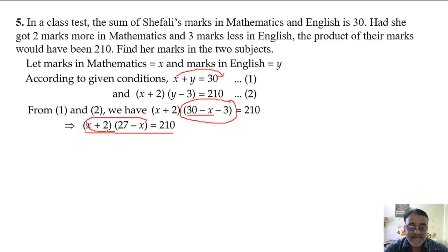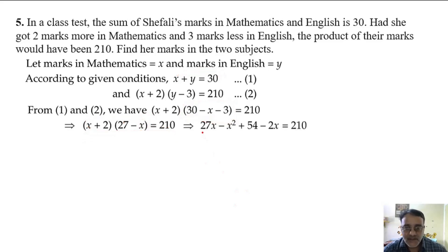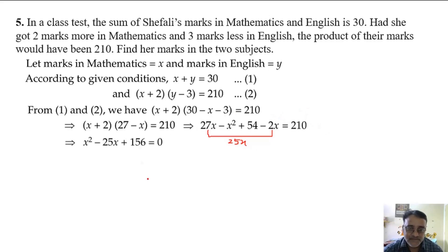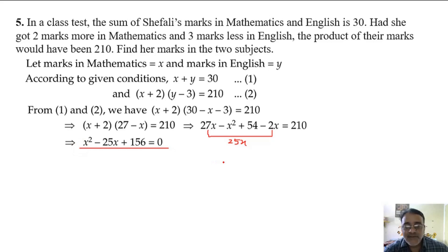Now we simplify and form the quadratic equation. First we expand the brackets, then shift 210 to the left side. We get 27x minus x squared plus 54 minus 2x, which gives 25x minus x squared plus 54 equals 210. So the final quadratic is x squared minus 25x plus 156 equals zero.